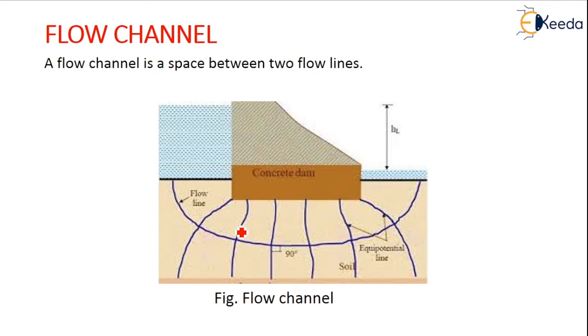What do you mean by flow channel? A flow channel is a space between two flow lines. There is a flow line, there may be another subsequent flow line. So the space between two flow lines is known as a flow channel.